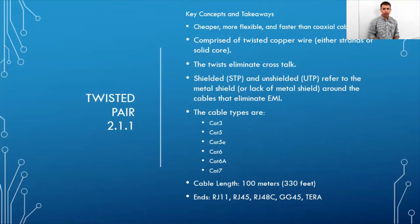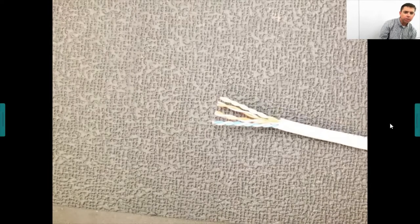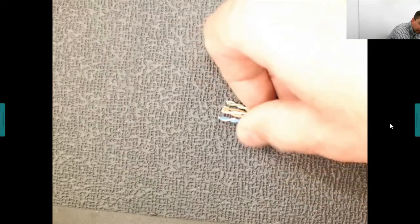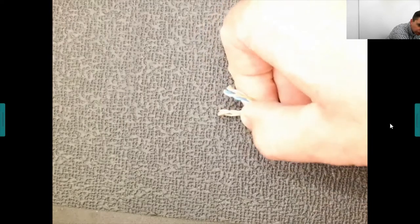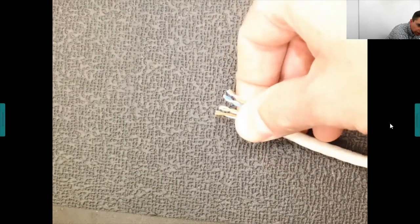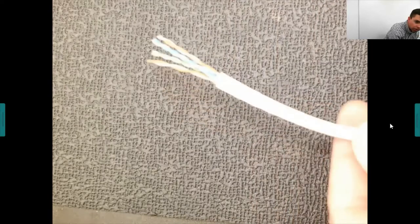Let's show what these cables actually look like. This is a standard twisted pair cable — you can see the various individual twisted wires inside. There's an outer sheath, and then another type of twisted pair from a different manufacturer that has different internal components.